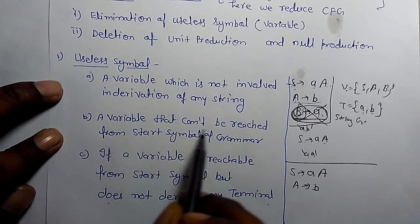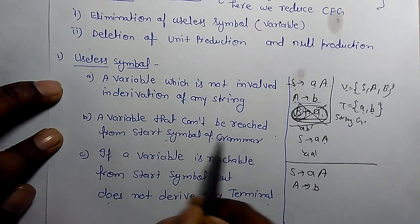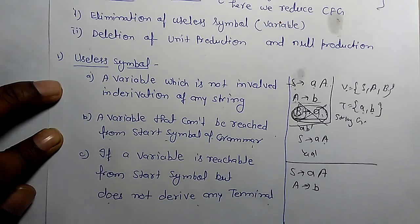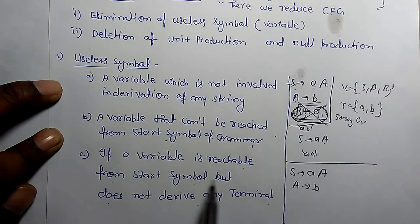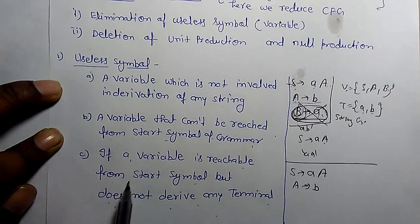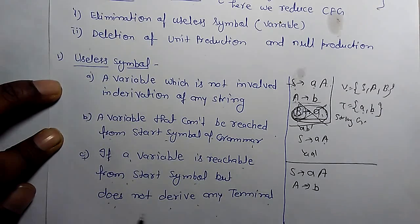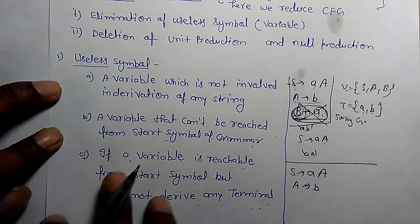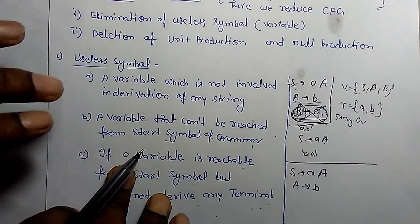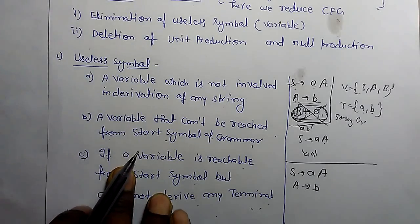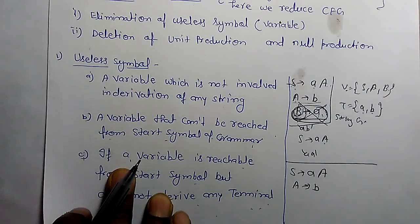A variable that can't be reached from the start symbol of the grammar is a useless symbol. Also, if a variable is reachable from the start symbol but does not derive any terminal, that is also a useless symbol. These two points are important for identifying useless symbols, and they should be removed to improve the efficiency of context free grammar.